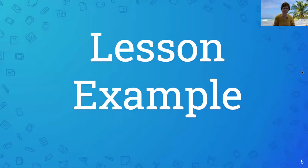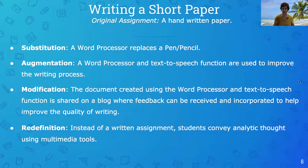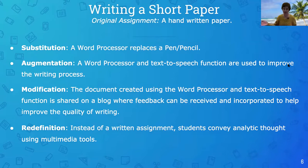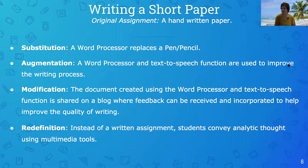Let's take a basic lesson done in pretty much any classroom — writing a short paper. If our original assignment is a handwritten opinion paper, we give students a piece of paper and a pencil and ask them to write on a specific topic. If we introduce the SAMR model at the substitution level, we would say: use a word processor. Really all you're doing is replacing your pen or pencil with typing — not having a huge impact on the learning or the lesson itself.